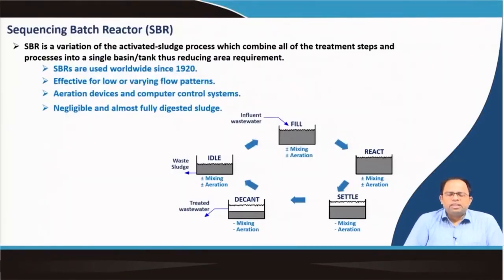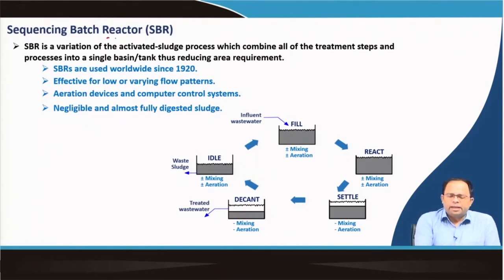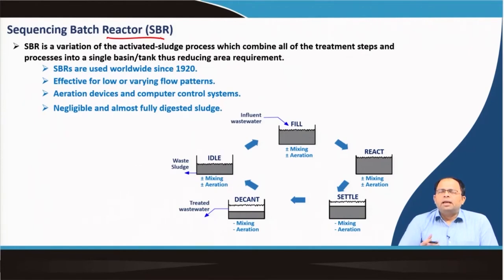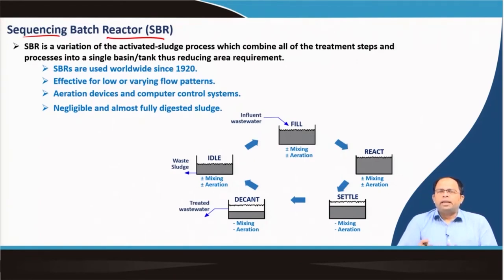A sequencing batch reactor is a variation of the activated sludge process. As you can understand from the term itself, we have a reactor — a chamber where the actual reaction takes place — and this is done in sequences. Within the same chamber we can do multiple stages of treatment in sequence.